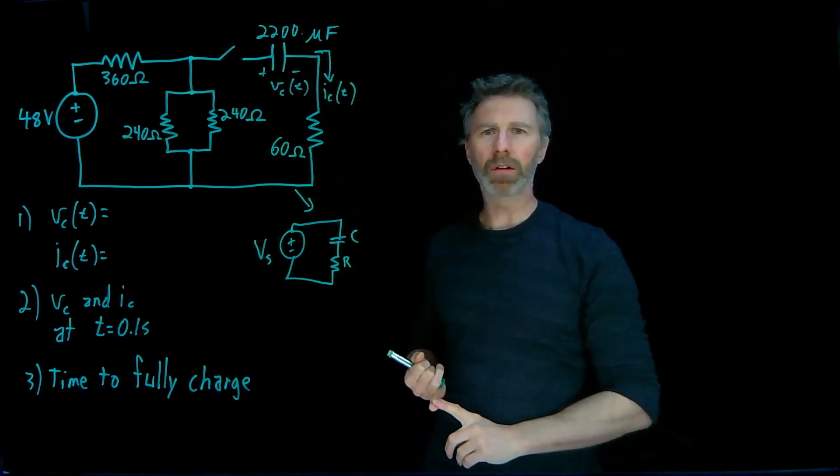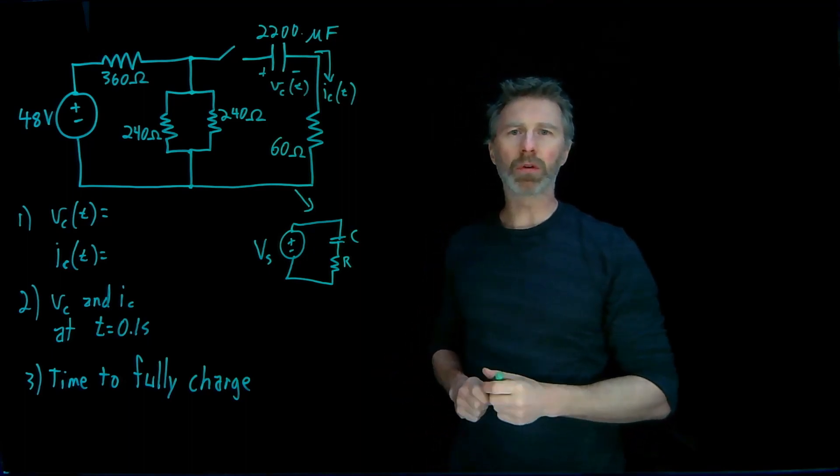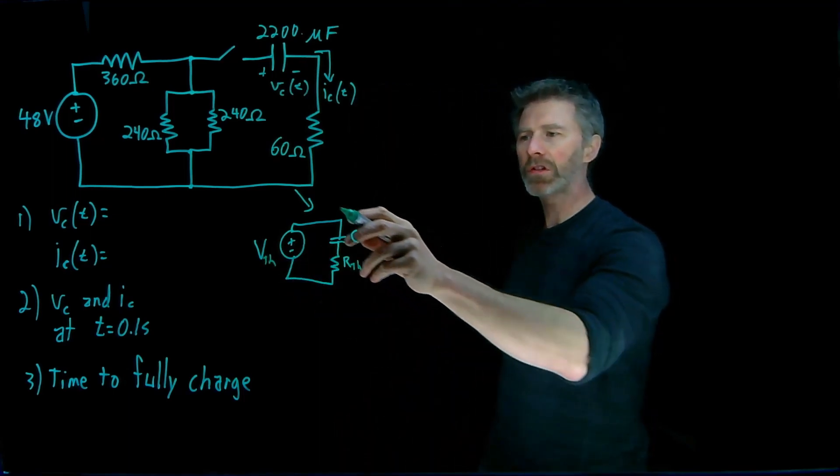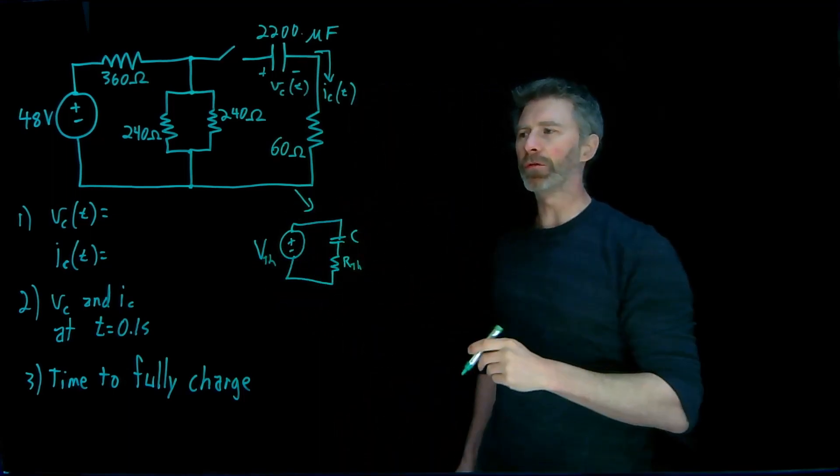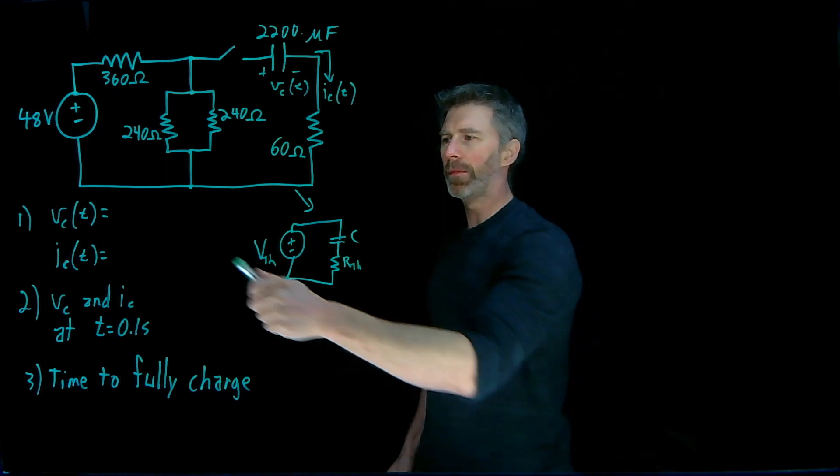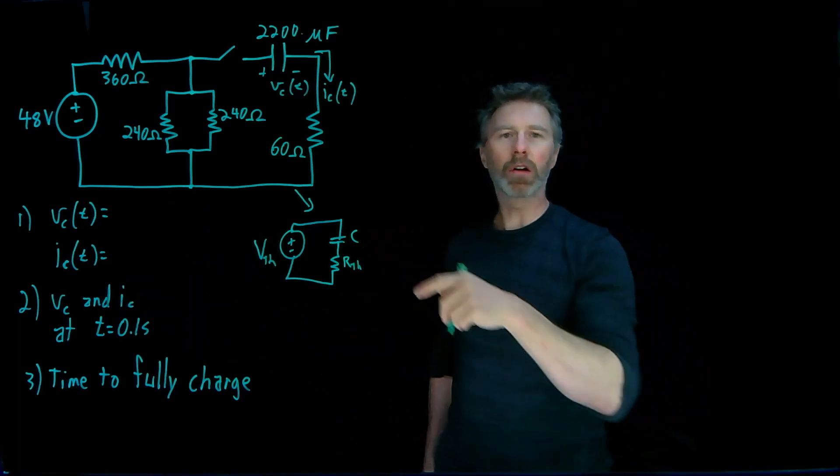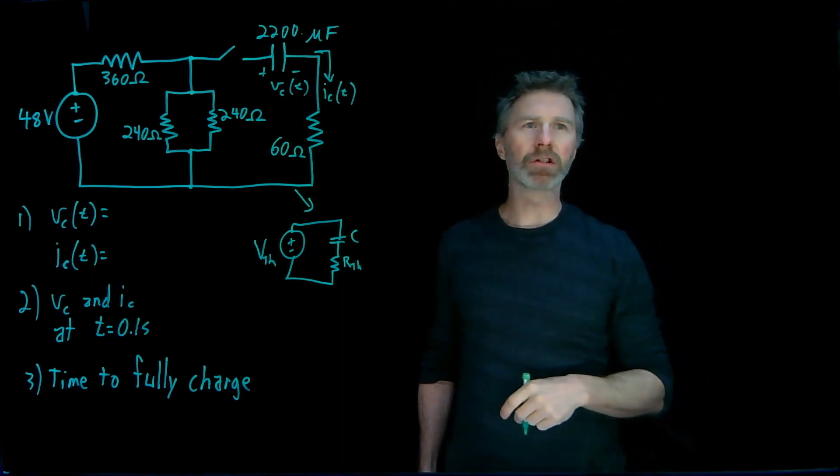First, we need to figure out what the thevenin equivalent voltage is and what the thevenin equivalent resistance is. And once we've done that, we will have our circuit in this format, and we will be able to figure out the voltage, the current over time, as well as voltage and current at a particular time, and how long it will take this capacitor to fully charge.